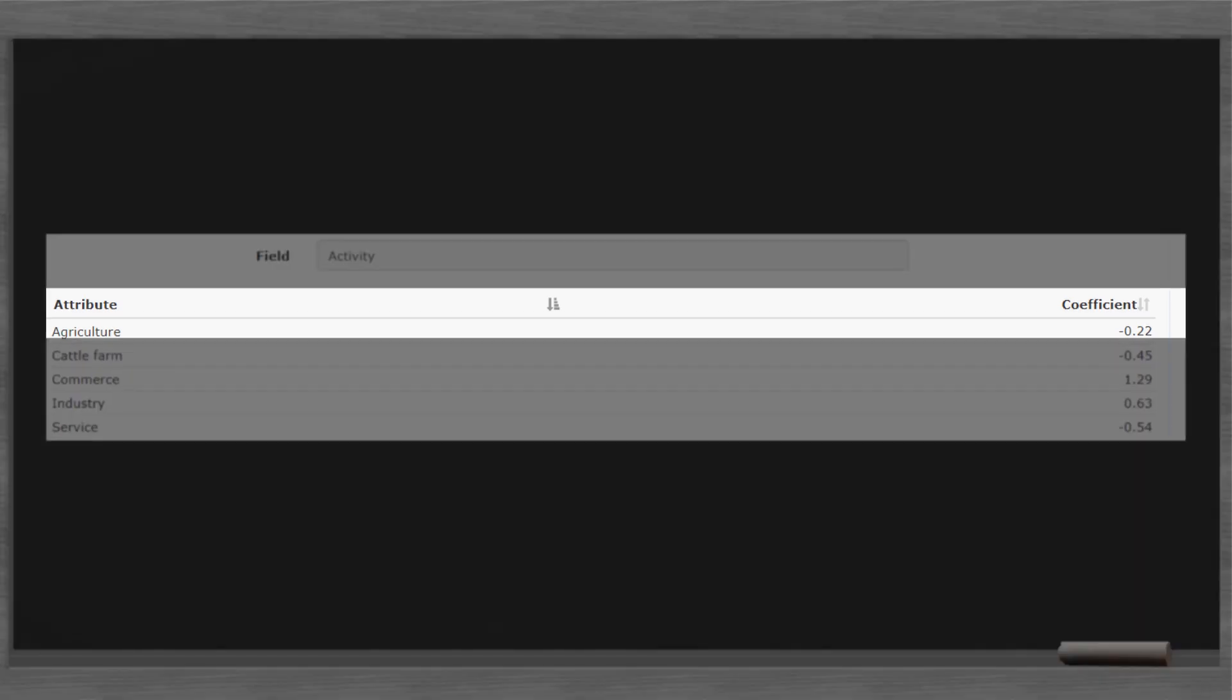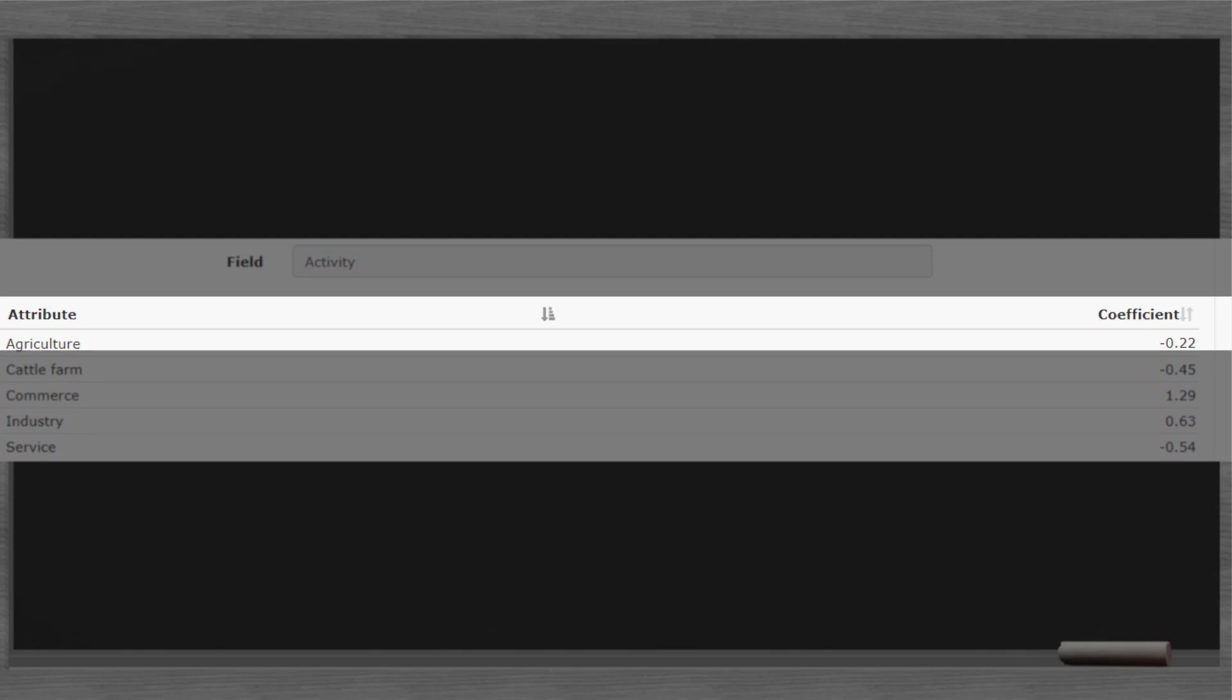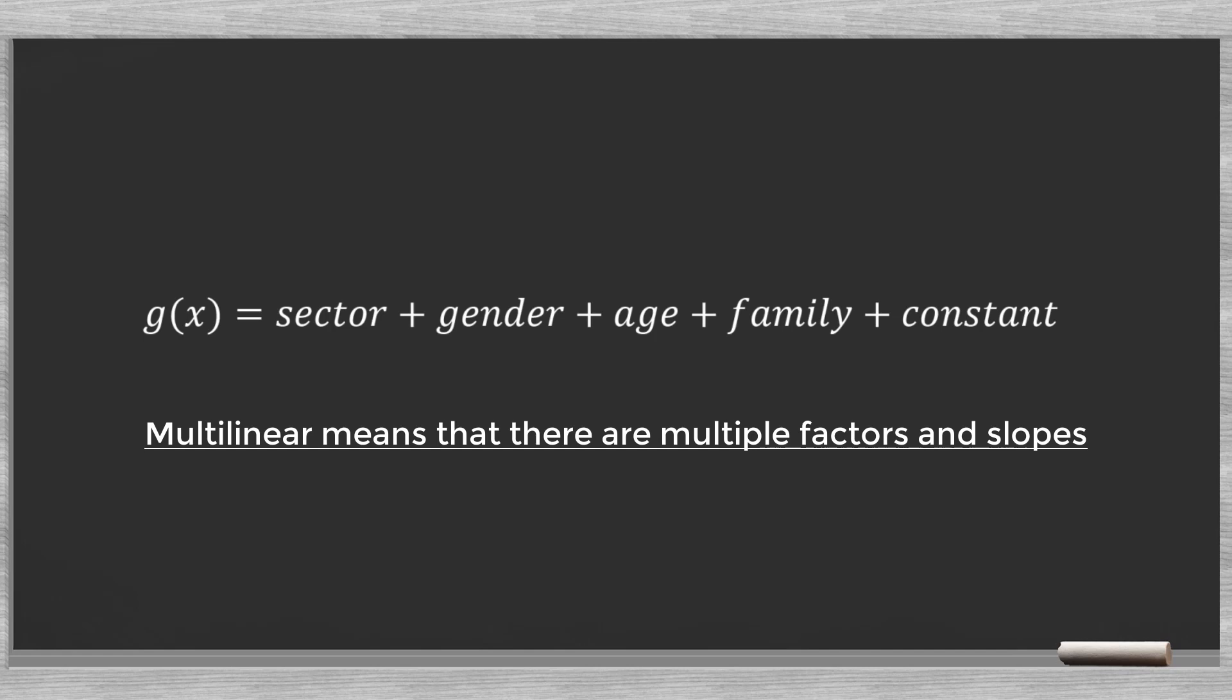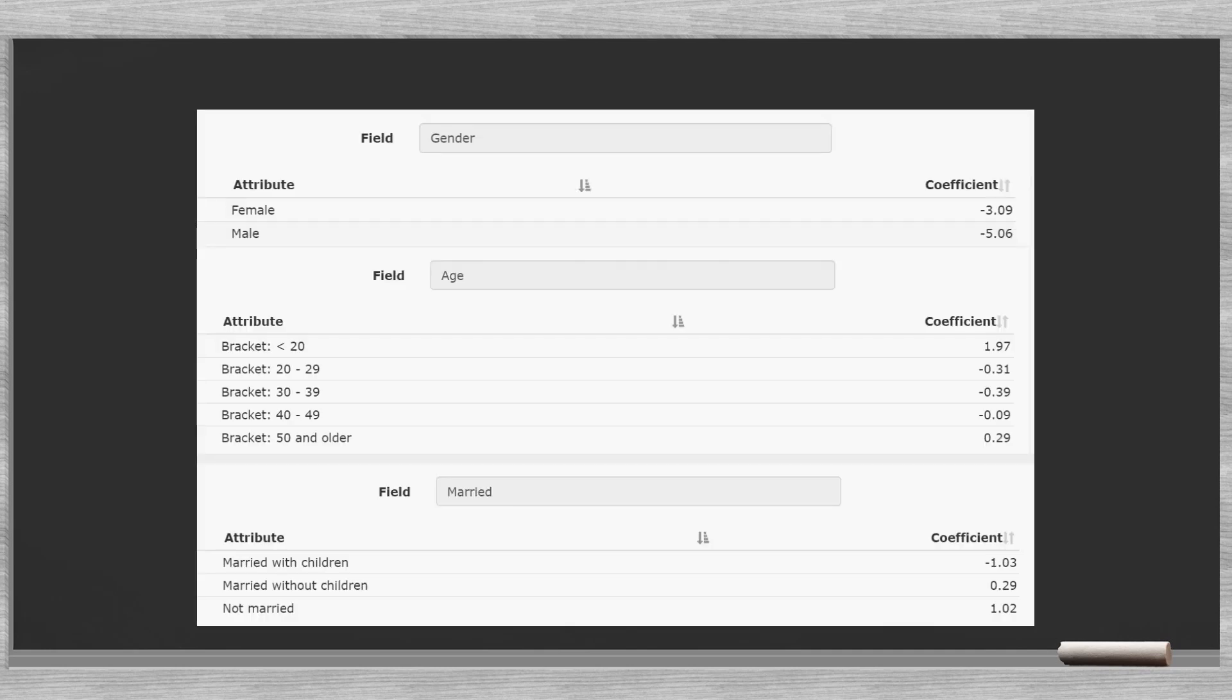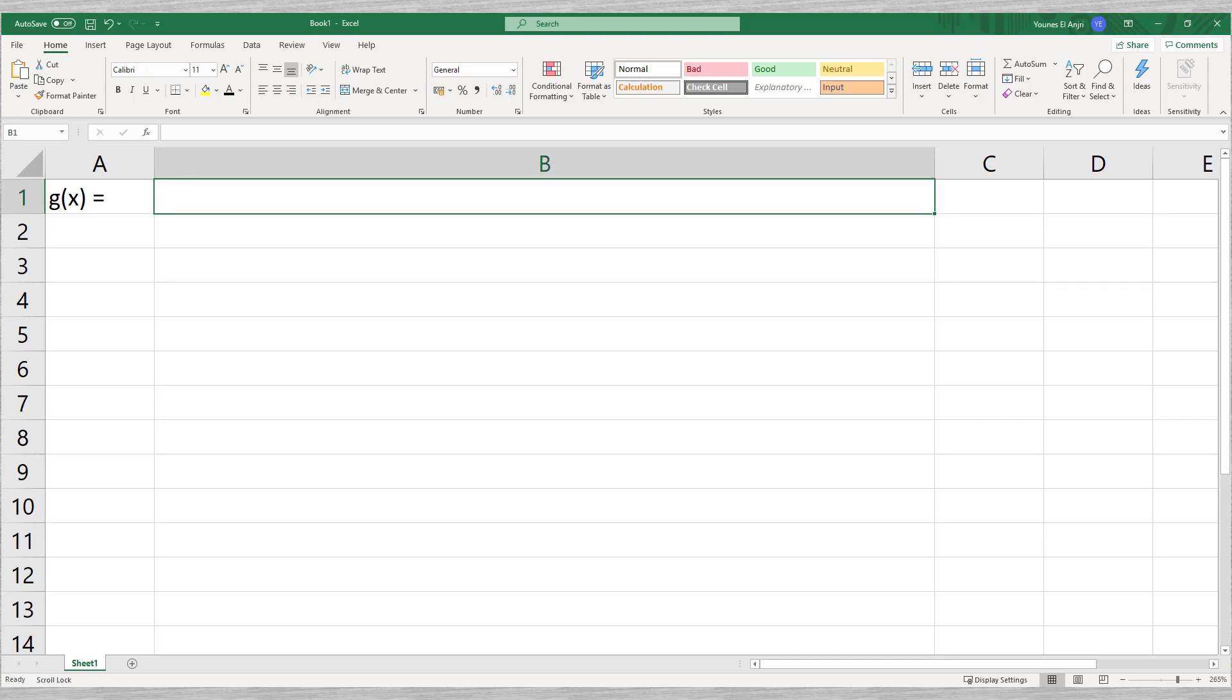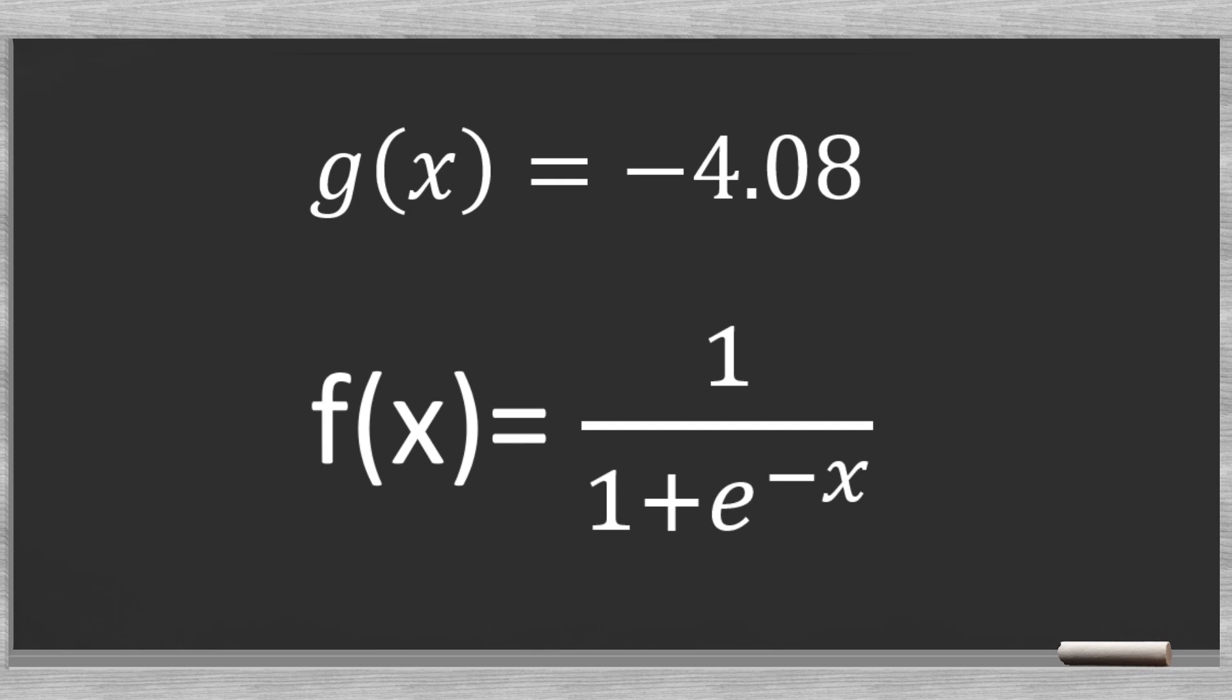In the table we see that for agriculture the slope is minus 0.22. We notice that in the case of a multilinear regression function there are only slopes or coefficients, so there is no x in the formula. For a 28-year-old male entrepreneur, bachelor, working in agriculture the formula would look like... So, the result of this multilinear function is minus 4.08. We need to put this in the general regression formula.